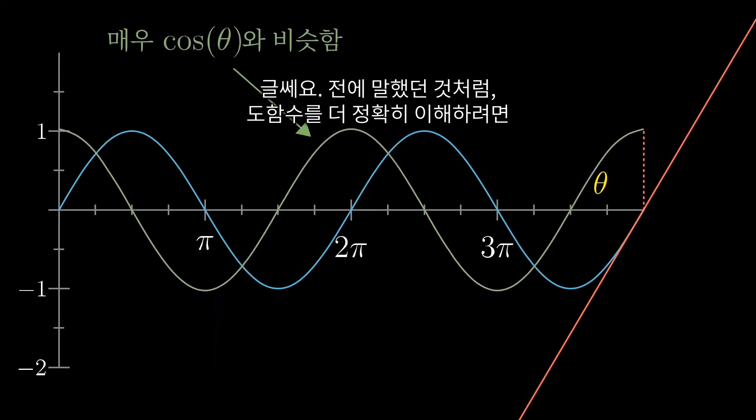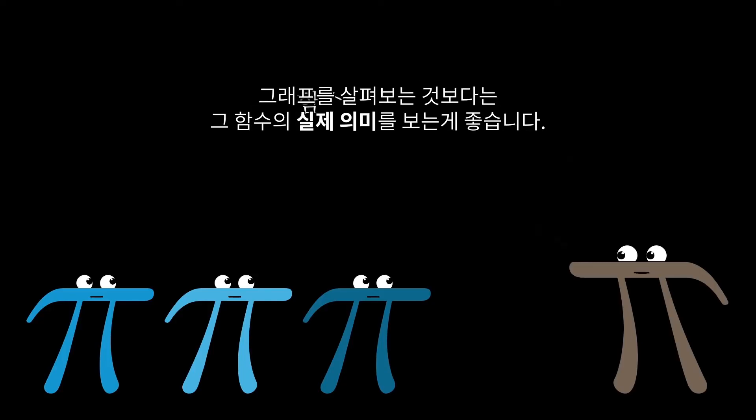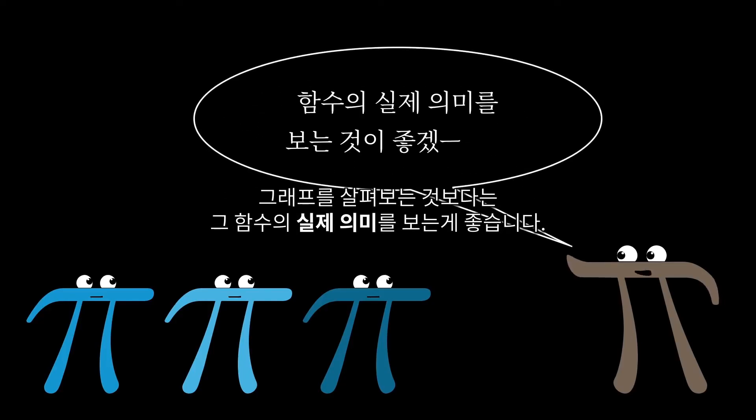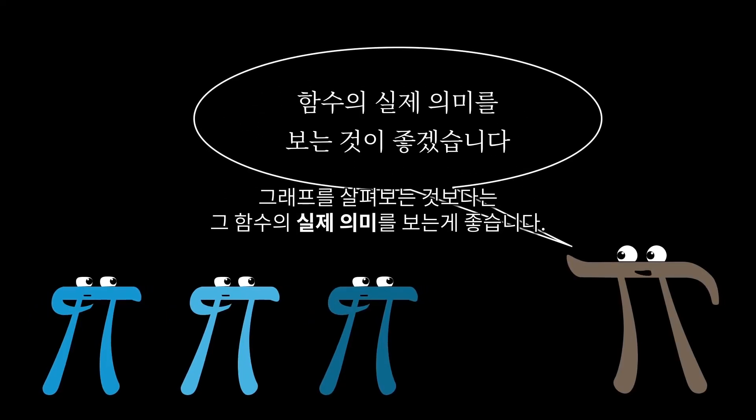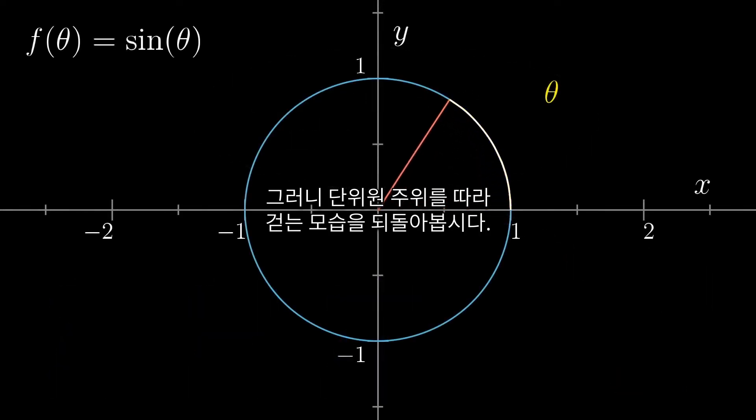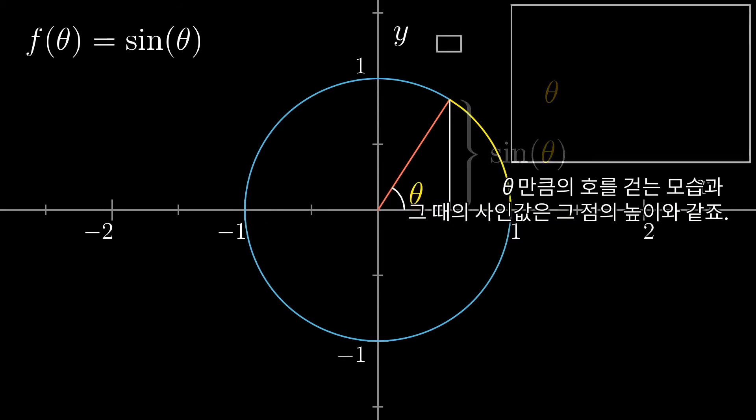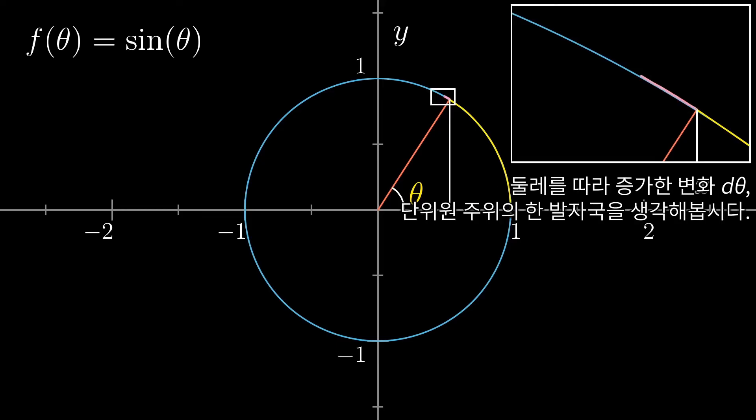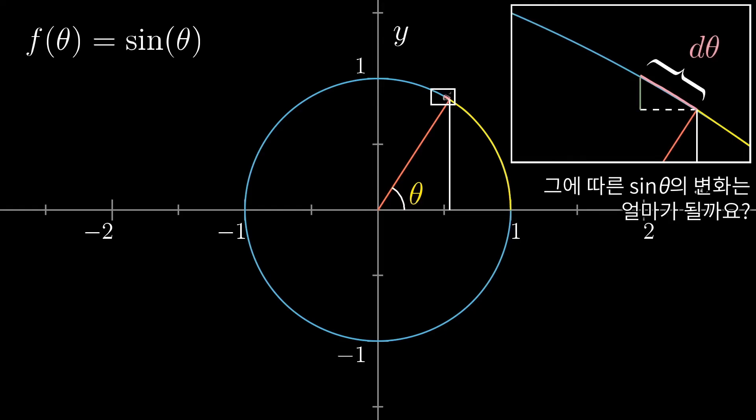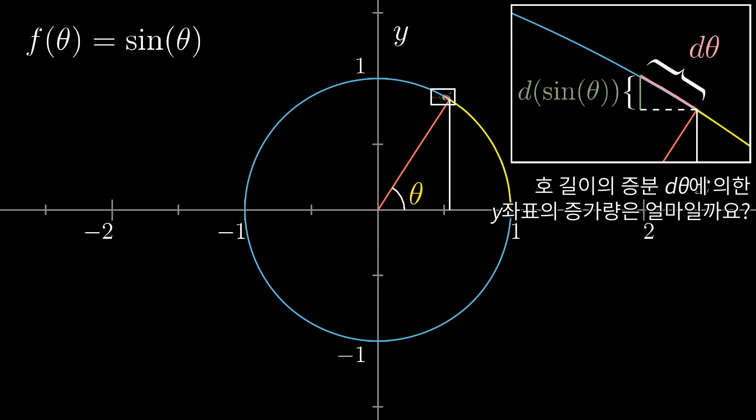Well, just like the previous examples, a more exact understanding of the derivative requires looking at what the function actually represents, rather than looking at the graph of the function. So think back to that walk around the unit circle, having traversed an arc with length theta, and thinking about sine of theta as the height of that point. Now zoom in to that point on the circle, and consider a slight nudge of d theta along their circumference, a tiny step in your walk around the unit circle. How much does that tiny step change the sine of theta? How much does this increased d theta of arc length increase the height above the x axis?